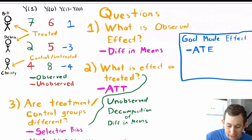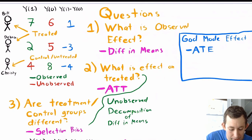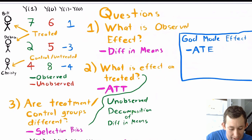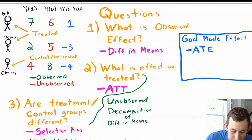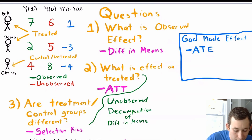Here is the example we saw last time where we had three people, and we're trying to estimate the effect of owning a cat on your stress level. Your outcome is stress level between 0 and 10, and your treatment value is a 1 if you own a cat and a 0 if you don't. We had three people — Bill, Debra, and Christy — where Bill and Debra were treated (they own a cat), and Christy was a control or untreated person because she does not own a cat.